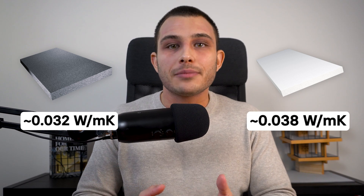For example, gray EPS contains graphite, which brings additional thermal properties and makes it more effective than white EPS. Gray EPS has a lambda of around 0.032 watts per meter Kelvin, achieving around 20 percent better insulation than white EPS, which has a lambda of around 0.038 watts per meter Kelvin.